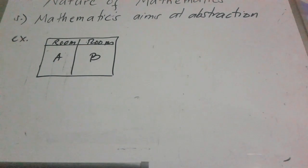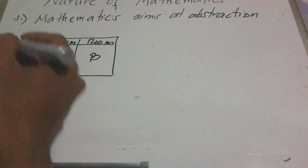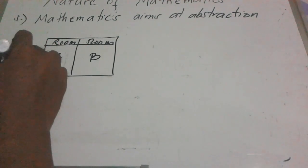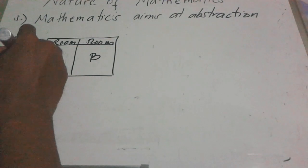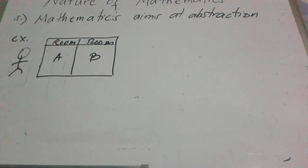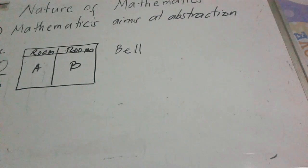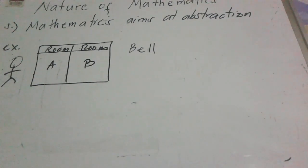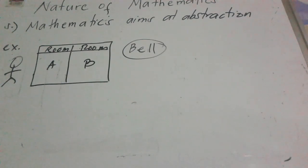For example of abstraction, imagine we have a box representing two rooms — room A and room B. Suppose there is a student named Pedro. Pedro is studying well. He has two rooms. Every time a bell rings, Pedro moves to the other room.